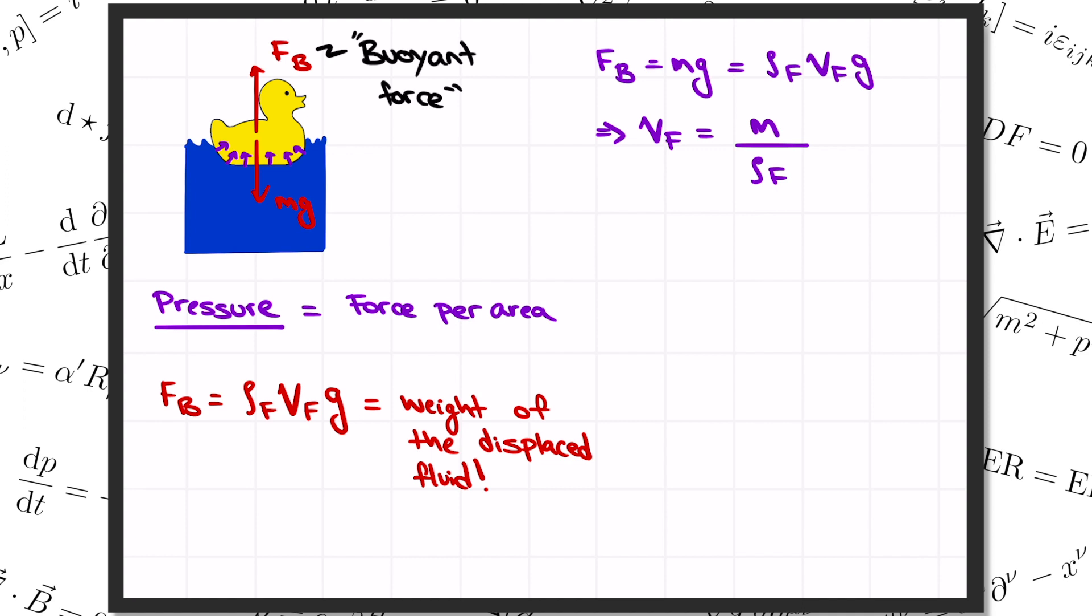Since rho sub f denoted the density of the fluid, let's let rho sub s denote the density of the solid object. If that density is a constant too, then we can write the mass of the object as its density rho sub s times its total volume V sub s.